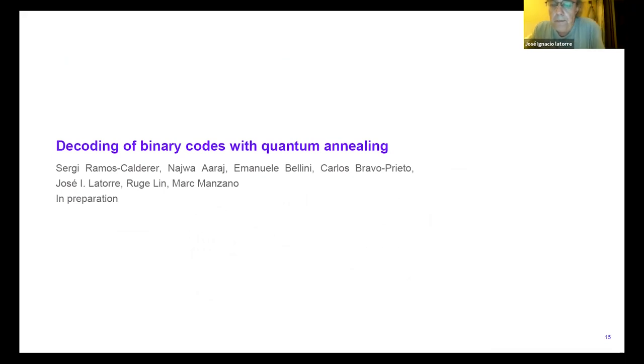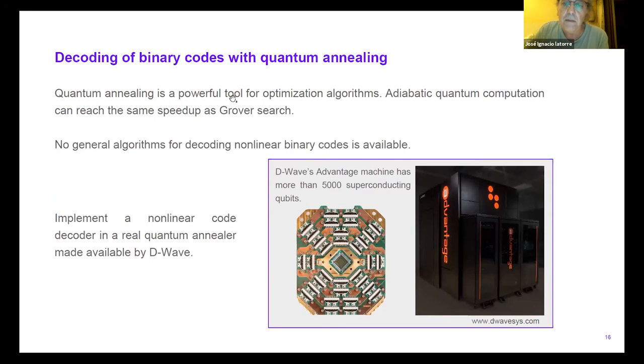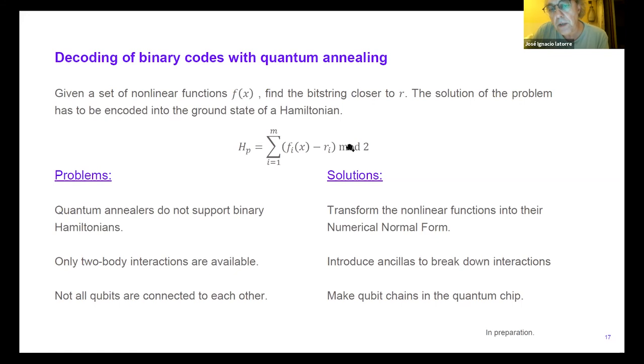Let me go to the second problem. This is the binary codes, done with Celsi, Nashua, Emmanuel, Carlos, Grugue, and Mark, in preparation. Here we took a completely different approach. Rather than doing a Grover, we go to what we call an annealer. So the problem is that you are given functions which are mod two of a number of variables, which is the input. And this is a larger space, and you add an error, and you want to find these things. So how do you do that? This is not easy, because to start with, physics doesn't know anything about mod two in an annealer.